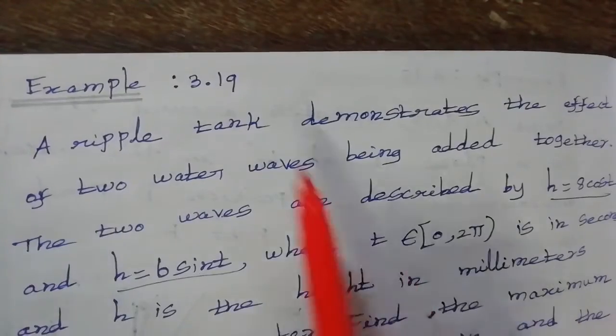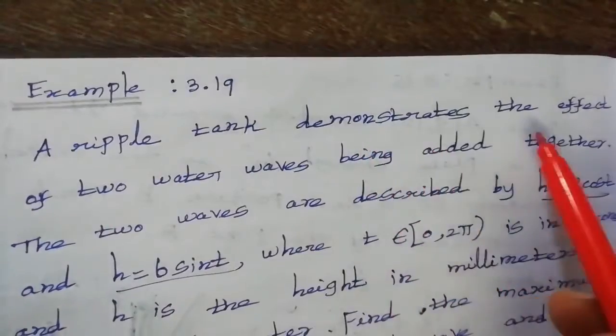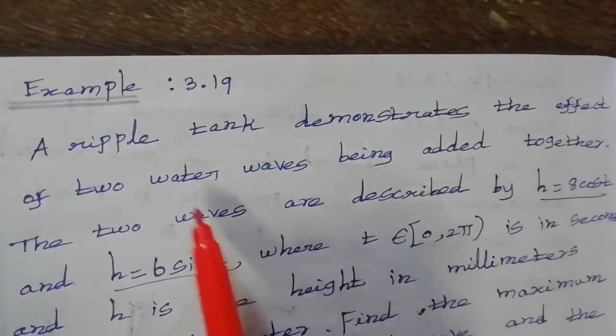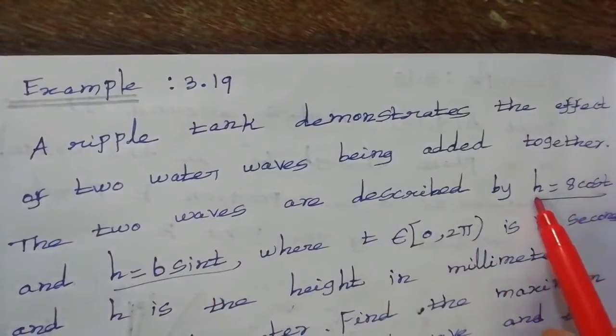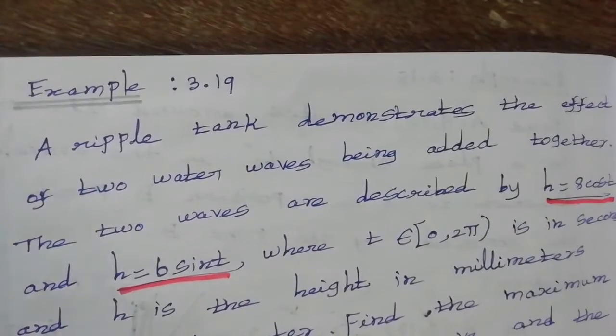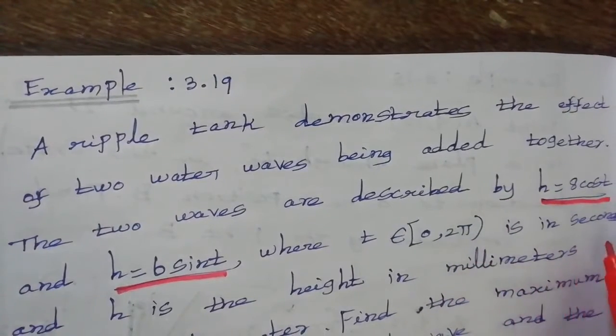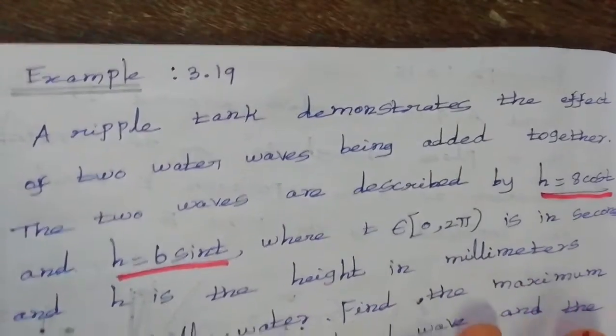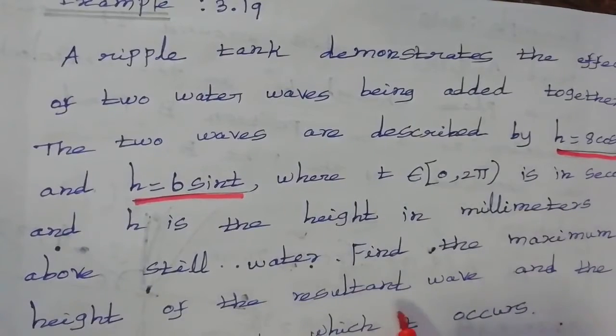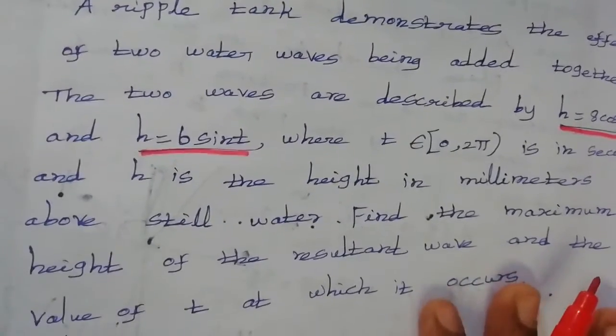Friends, in the video example 3.19, the question is: A ripple tank demonstrates the effect of two water waves being added together. The two waves are described by height equal to 8 cos t and height equal to 6 sin t, where t belongs to closed interval 0 to 25 is in seconds and height is the height in millimeters above still water. Find the maximum height of the resultant wave and the value of t at which it occurs.